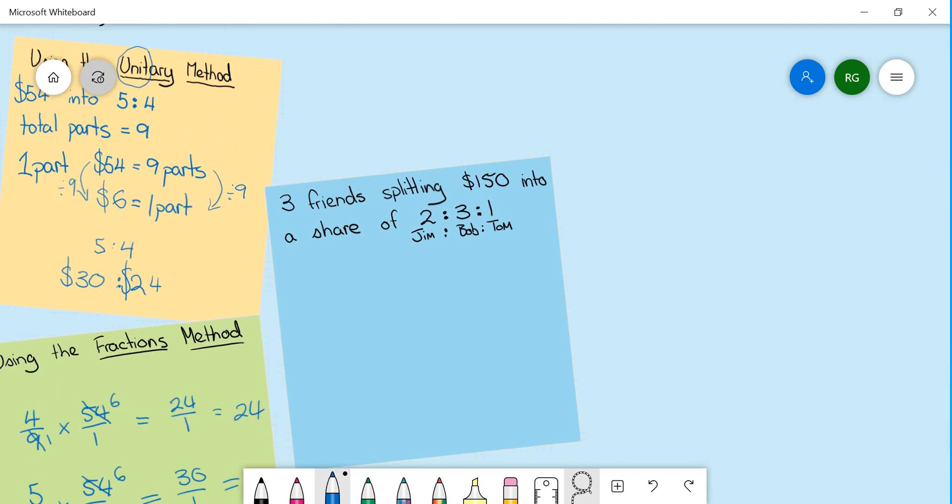Finally I'm going to do a slightly more complicated question. This time splitting a similar amount 150 between three people and the three people don't get an equal share. We have Jim Bob and Tom. Jim gets two parts Bob gets three parts and Tom gets one part. First step is to work out the number of total parts and we simply do that by adding two plus three plus one equals six.